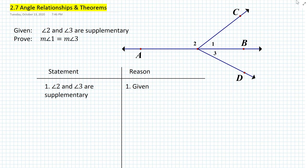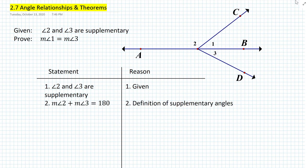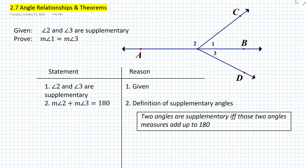What does that tell us? What does it mean that they're supplementary? We learned in a previous definition that an angle is supplementary if and only if the measure of those angles adds up to 180 degrees. So we can now use the definition to state: measure of angle 2 plus measure of angle 3 is equal to 180. That is the definition of supplementary angles as a reason. Two angles are supplementary if and only if those two angle measures add up to 180.